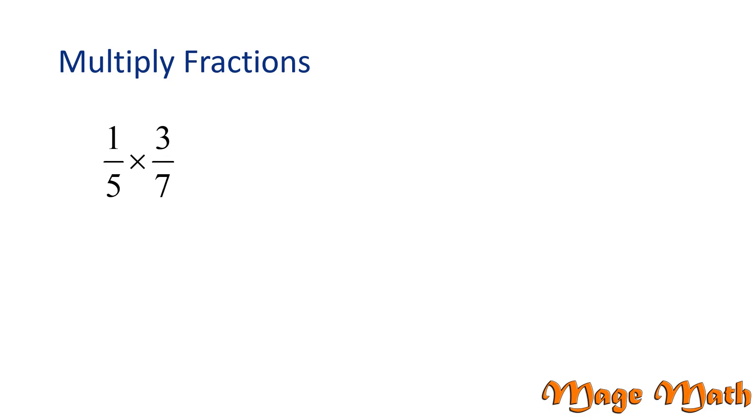Today, we're going to multiply fractions. Our problem is 1/5 times 3/7. To multiply fractions using the standard algorithm, we multiply the numerators together and we multiply the denominators together. So we can write the problem like this. 1 times 3 is 3 and 5 times 7 is 35. So, 1/5 times 3/7 equals 3/35. Great job!